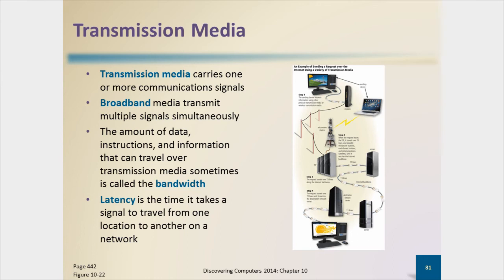Transmission media is what we put those ones and zeros on. If wired, it's usually unshielded twisted pair; if wireless, it uses some sort of Wi-Fi connection. Broadband media transmits multiple signals simultaneously — for example, cable can carry both television signals and internet data. Bandwidth refers to the amount of data that can travel over a transmission medium — the more bandwidth, the faster your connection. Latency is the time it takes a signal to travel from one location to another; as distances grow, latency increases.